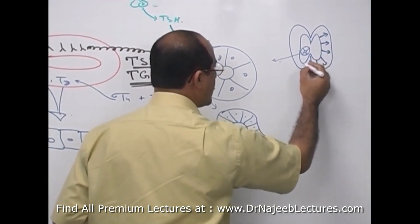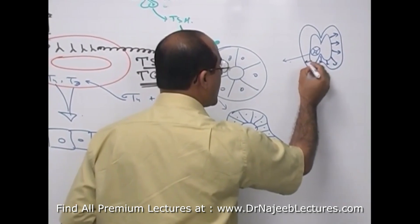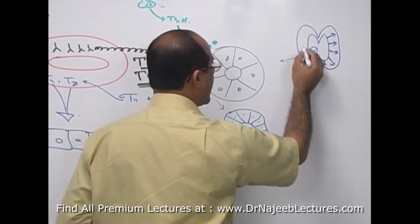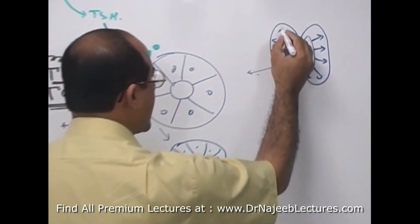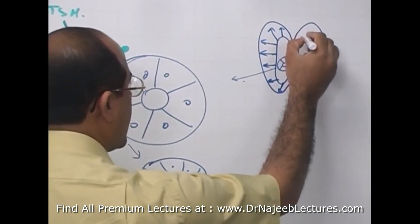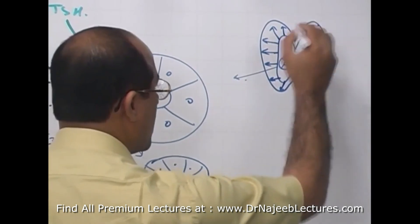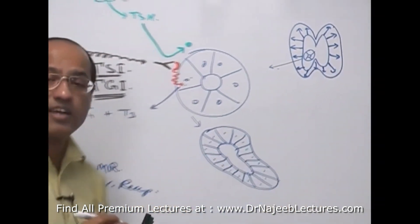Due to excessive stimulation of TSH receptors, cuboidal cells become columnar, there is an excessive number of cells per follicle, and the total number of follicles increases, eventually causing diffuse enlargement of the thyroid gland — called diffuse goiter.